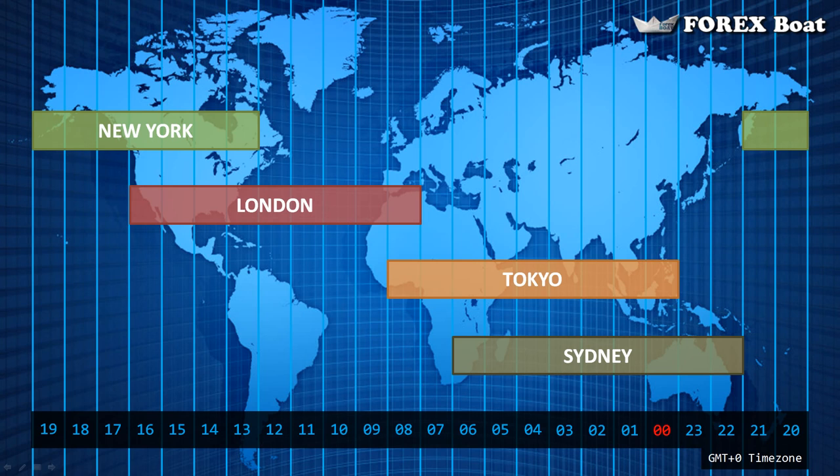The next session is the Tokyo session, which is also called the Asian session because right after Tokyo, large economic hubs like Singapore and Hong Kong start waking up. The Asian session starts around midnight GMT when most of Europe is still in a deep sleep, which is why you often hear European traders talking about waking up at 3 a.m. just to trade the Asian session before going back to bed.